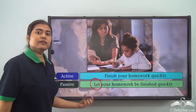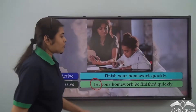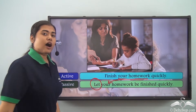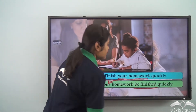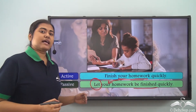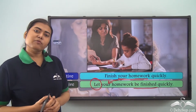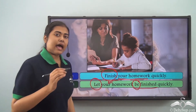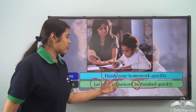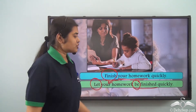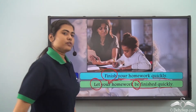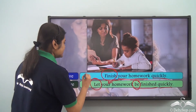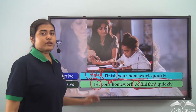We have an additional word 'let' at the beginning of the sentence. The object in the active voice, 'your homework', comes after 'let'. Then we write the verb 'be finished'. In the passive form the verb is 'be' plus the past participle form of the main verb. The main verb here was 'finish', so we keep 'be' and use the past participle 'finished'. Then the remaining part 'quickly' follows. So the sentence becomes: 'Let your homework be finished quickly.'